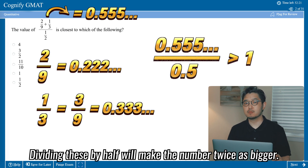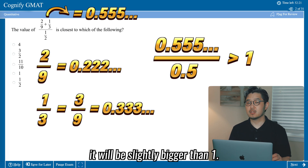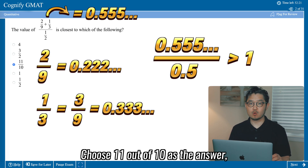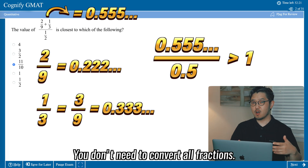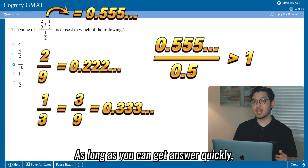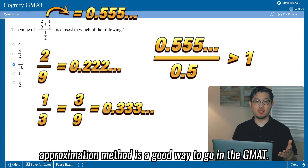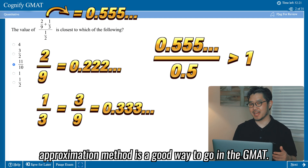Dividing by half will make the number twice as large. Therefore, it will be slightly bigger than 1. Choose 11 out of 10 as the answer, which is option C. You don't need to convert all fractions. As long as you can get the answer quickly, the approximation method is a good way to go in the GMAT.